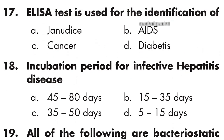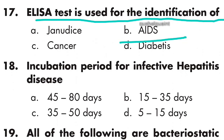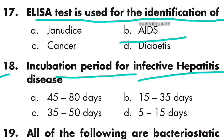Question 17: ELISA test is used for identification of AIDS. Question 18: The incubation period for infective hepatitis disease is 5 to 15 days. Option D is right.